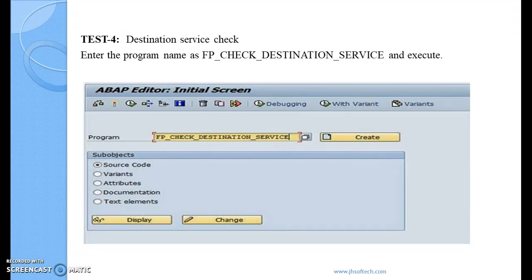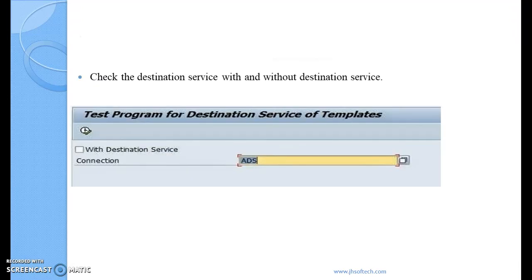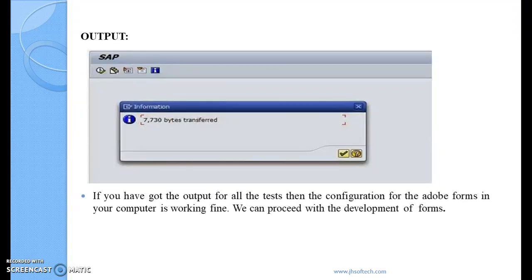Destination service check: use the program name fp-check-destination-service and execute. Give the connection as ADS and you will get the output. If you have got output for all the tests, then the configuration of Adobe Forms on your system is working fine and you can proceed with the development of the forms.